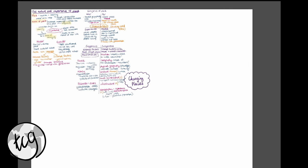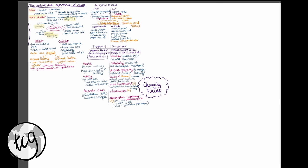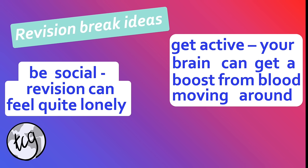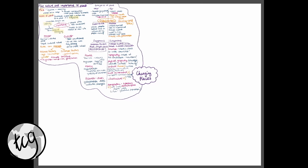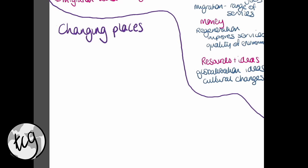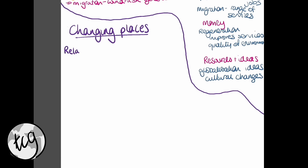That is the first part of our mind map for Changing Places — all the nature and importance of place. Take a break, and afterwards we will go through the next section, which is about Changing Places: relationships, connections, meaning and representation. The next part of the specification we're going to look at is changing places: relationship, connection, meaning and representation. We need to understand how relationships and connections on people and place change demographic and cultural characteristics, or economic change and social inequalities.